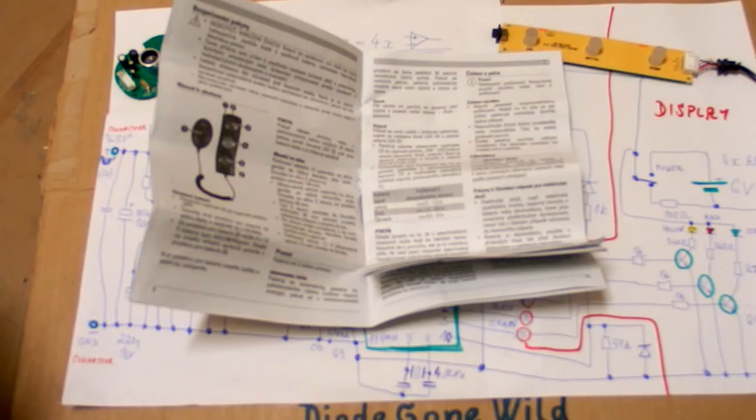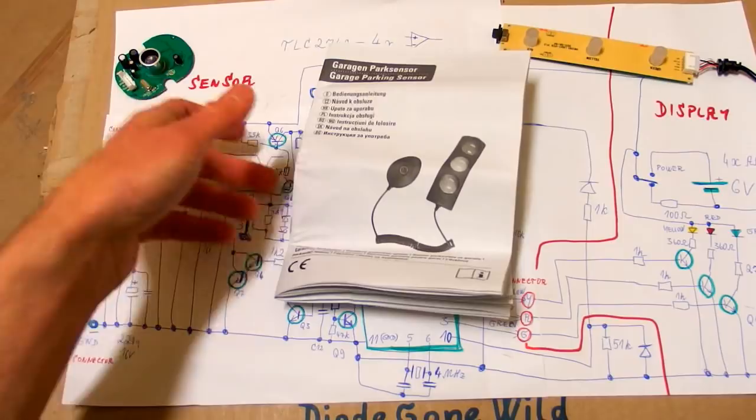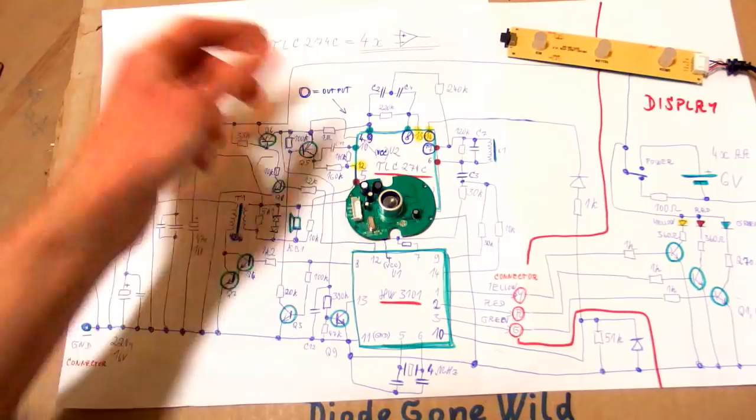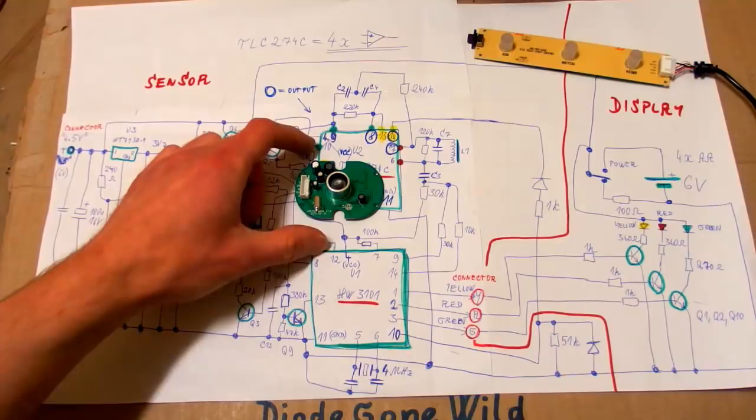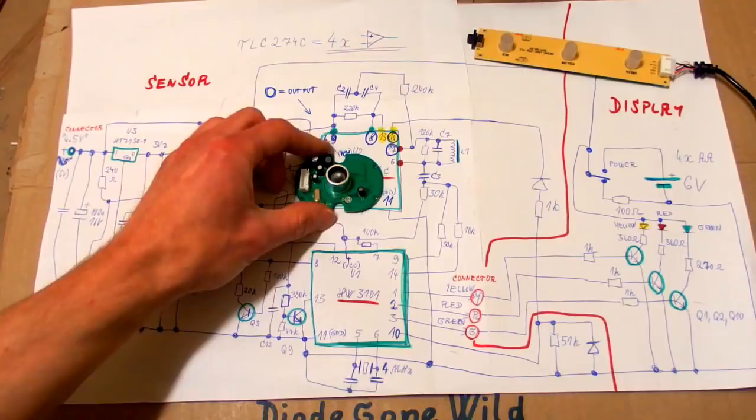But anyway, it's an interesting device which can be useful, but there is just one question. What's the point of putting this in your garage if you can put the same type of device into your car and have it always with yourself. When it's in your garage it's only giving you signals when you go into the garage. But when it's in your car it's giving you signals everywhere you go. But it may be useful to prevent somebody else from demolishing your garage.